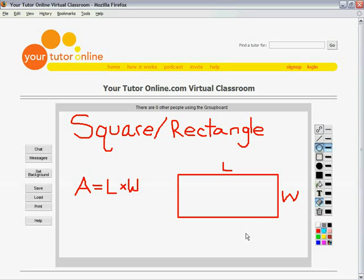The first and easiest shape we're going to look at are squares and rectangles. Squares are rectangles, so they have the same area formula. Area is equal to the length times the width, or in other words, just one side times the other side.